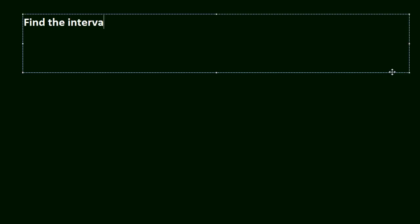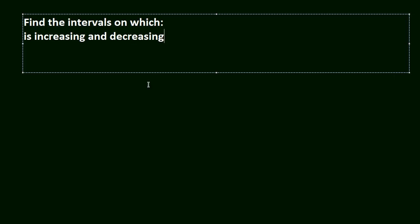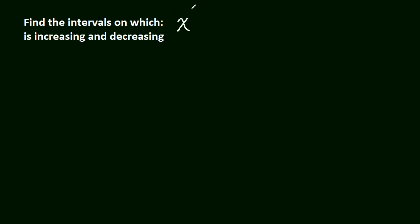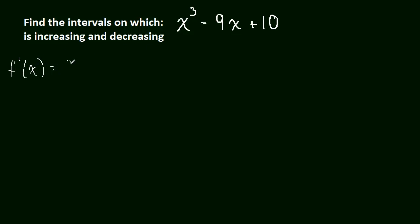Let's find the intervals on which a function is increasing and decreasing. Let's say our function is x cubed minus 27x plus 10. First, let's take the derivative, because the derivative helps us find the slope of the function. Taking the derivative gives us 3x squared minus 27.